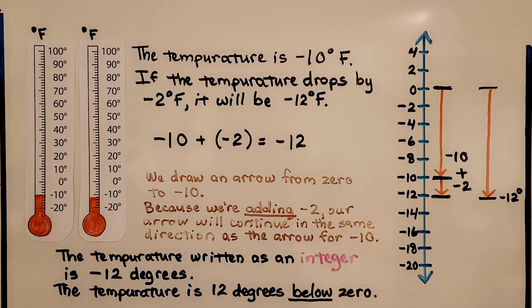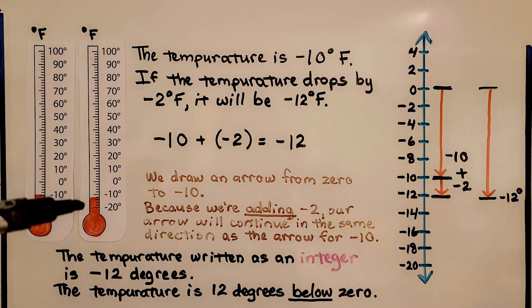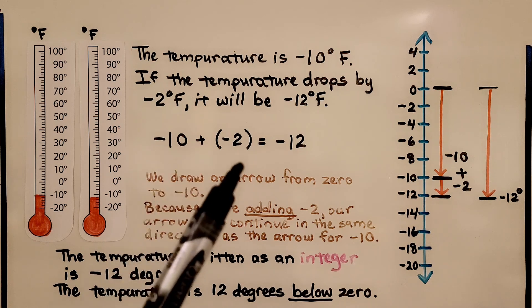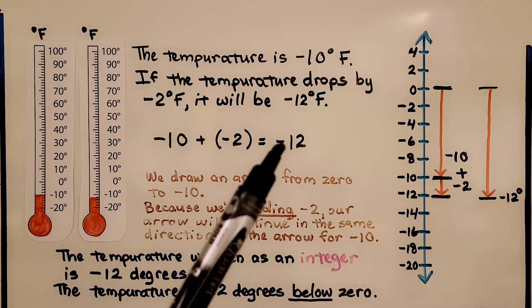The temperature is negative ten degrees Fahrenheit. If the temperature drops by two degrees Fahrenheit, it will be negative twelve degrees Fahrenheit. Negative ten plus negative two is equal to negative twelve.